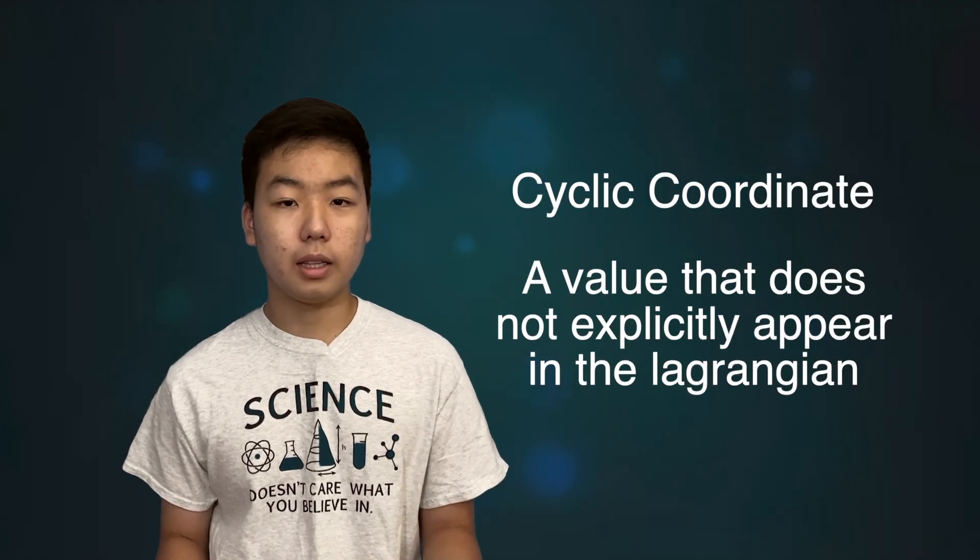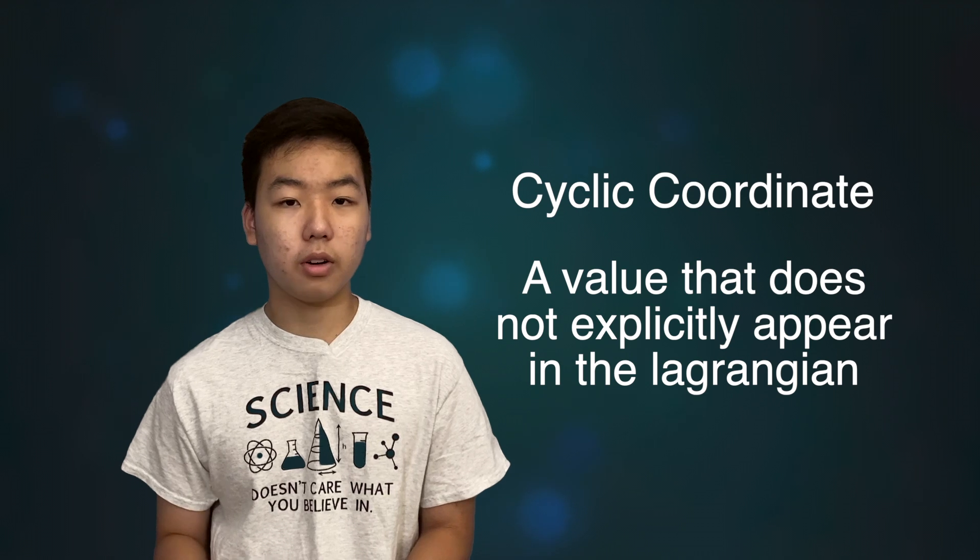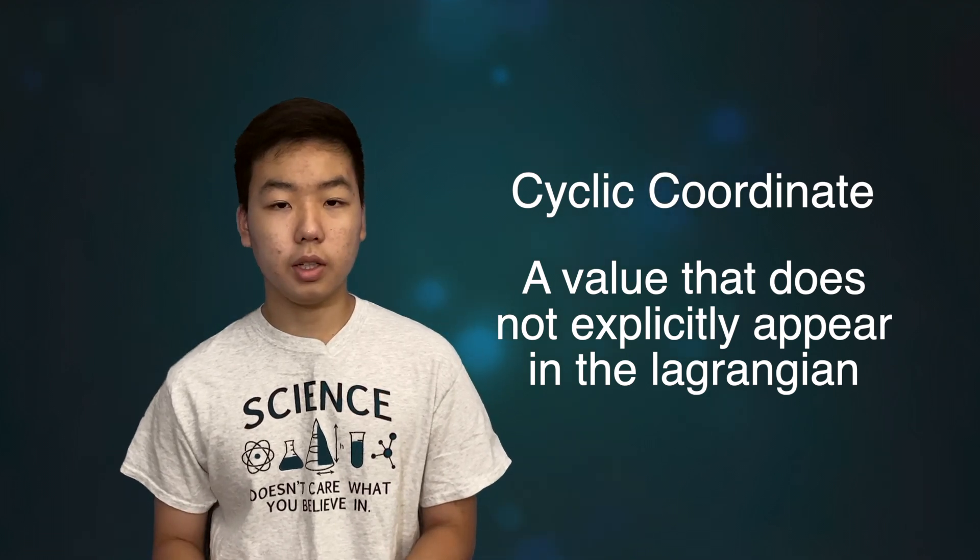So how do we use this concept to derive conservation laws? Well first, we have to define a cyclic coordinate, which is a value that does not explicitly appear in the Lagrangian, meaning that the result does not depend on it.